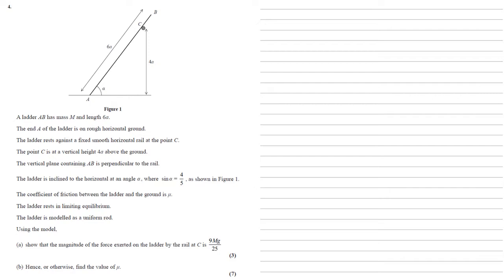The point C is at a vertical height 4A above the ground. The vertical plane containing AB is perpendicular to the rail. The ladder is inclined to the horizontal at an angle alpha where sin alpha equals four fifths as shown in figure one. The coefficient of friction between the ladder and the ground is mu. The ladder rests in limiting equilibrium and the ladder is modeled as a uniform rod.